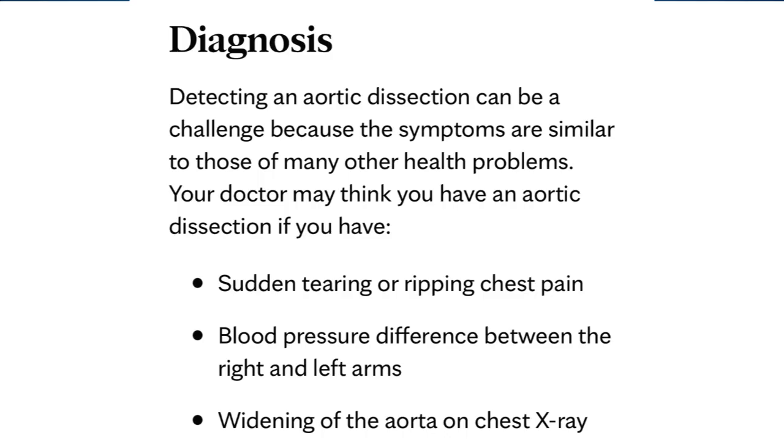How do you diagnose this condition? There's a sudden tearing or ripping chest pain, there can be a blood pressure difference between your right and left arm, and on an x-ray you can see widening of the aorta. A good way to remember: Type A involves the ascending aorta — A for ascending, and the pain tends to be anterior, so more chest pain. Type B — B for back — tends to present with back pain. So you may have more chest pain with Type A versus back pain with Type B.